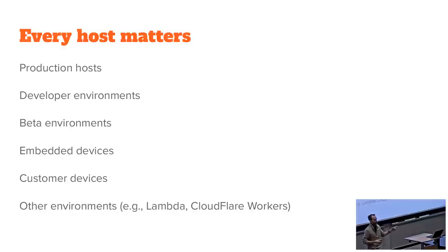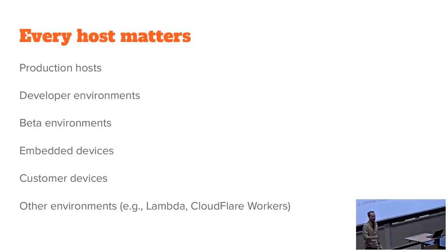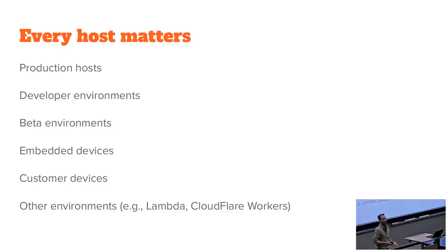Every host matters here — not just physical servers, but developer environments, beta environments, testing and benchmarking environments. If you deploy to embedded devices like robots or drones, you certainly want to know what every single one of them is running at any given time. Customer devices are even worse — if you deploy software to Android phones or pacemakers, you really want to know exactly what version of every piece of software went into that so that if there's a problem, you can notify the people it might affect and hopefully update them in time. That includes abstract computing resources like Lambdas or Cloudflare Workers — a compromise there might lead to a compromise of your database.